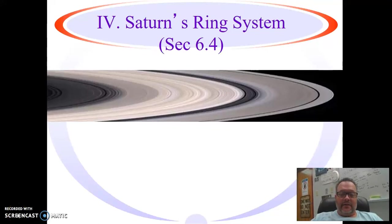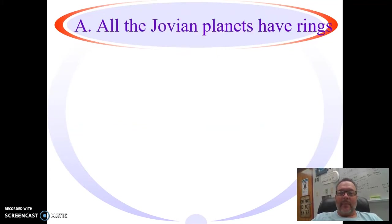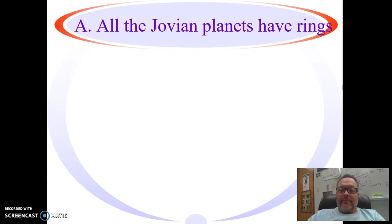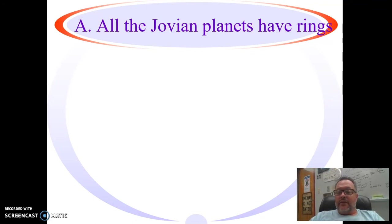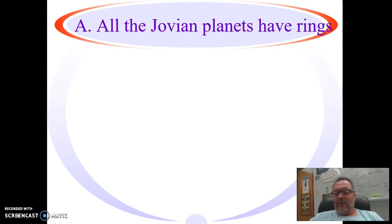Okay, we're going to talk about Saturn's iconic rings today. Here we go. First part of section 6-4. Well, it turns out that rings seem to be a common thing in the universe. All four of our gas giant planets, also sometimes called the Jovian planets, all four of them have rings. Saturn's, though, are in a different league than all the rest.